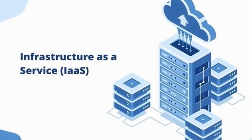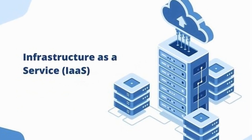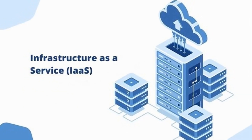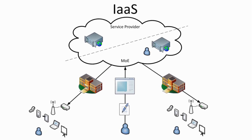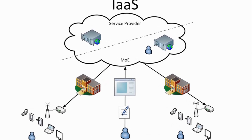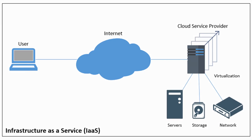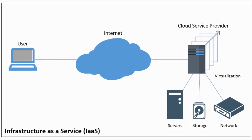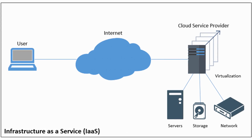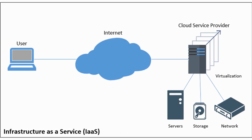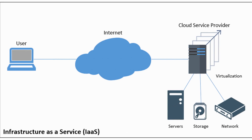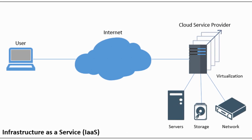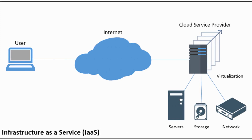Infrastructure as a Service, or IaaS, is a step away from on-premises infrastructure. It's a pay-as-you-go service where a third party provides you with infrastructure services like storage and virtualization as you need them via the cloud through the internet. As the user, you are responsible for the operating system and any data, applications, middleware and runtimes, but a provider gives you access to and management of the network, servers, virtualization and storage you need.